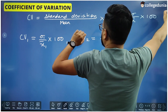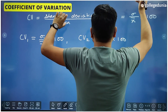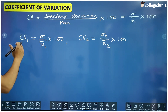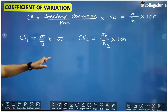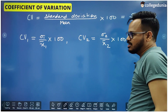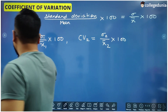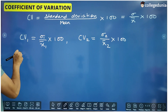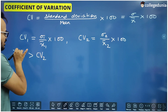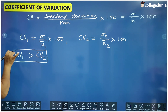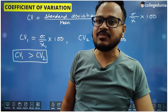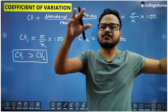Standard deviation is represented by sigma and mean is represented by x-bar, so CV equals sigma by x-bar into 100. This is the coefficient of variation of the first series of data and this is the coefficient of variation of the second series. If suppose CV1 is greater than CV2 — meaning the coefficient of variation of the first series is more than that of the second series — when we say series, we mean the series of values present in a data.